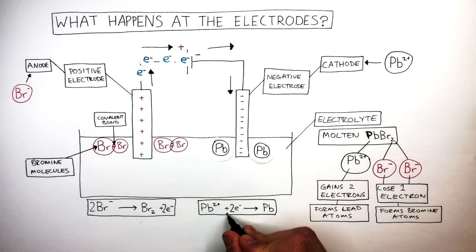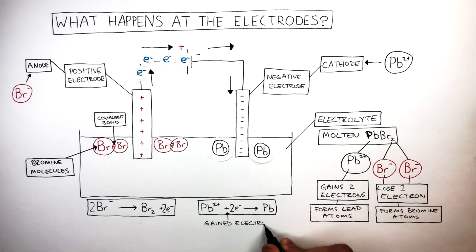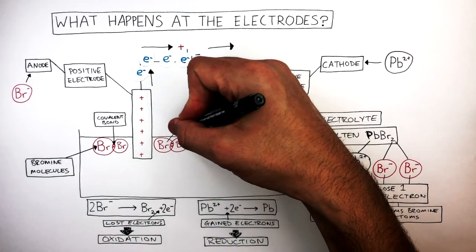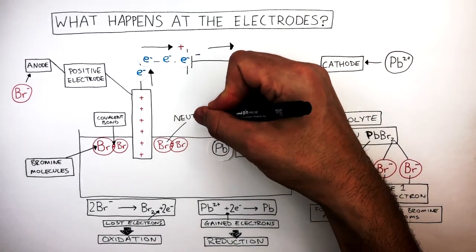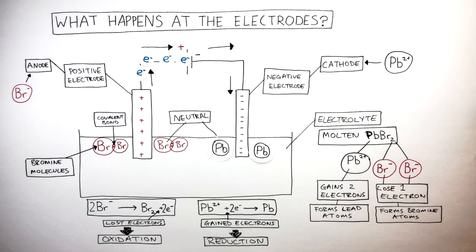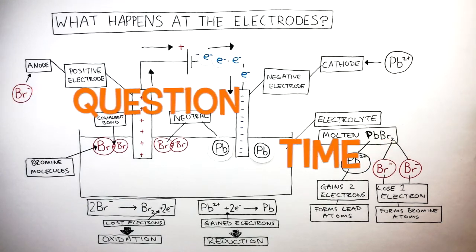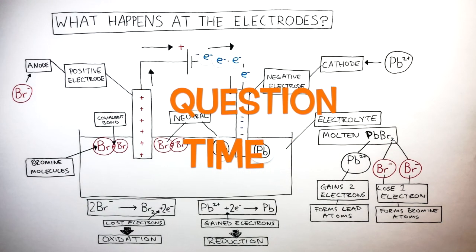As the lead cations have gained two electrons to form lead atoms we say reduction has taken place. The lead cations have been reduced. This half equation shows how the bromide anions have lost electrons, so we say oxidation has taken place. We started off electrolysis with ions and we have now finished off with neutral bromine molecules and lead atoms. It's question time. Attempt these questions to check your understanding.